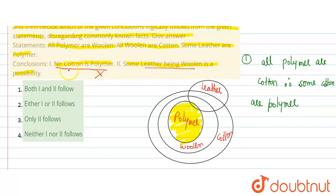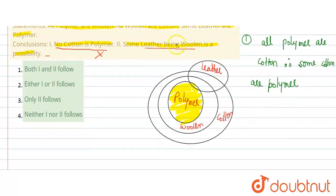Next kya kaha raha hai, some leather being woolen is a possibility. Kuch leather ke woolen hone ki possibility hai. Yeh bhi aapka wrong ho gaya.